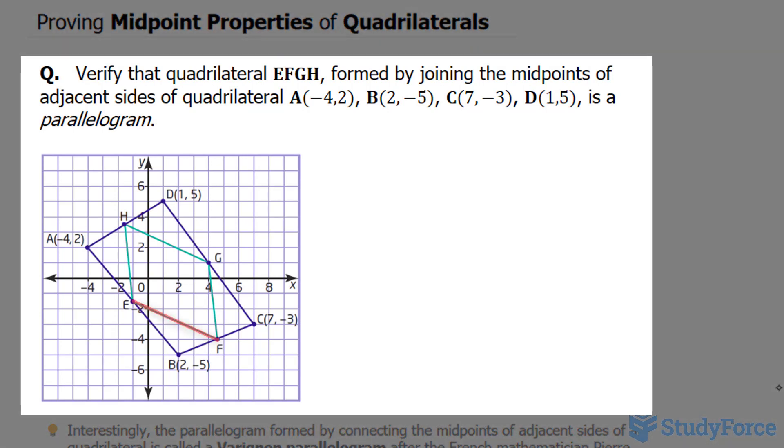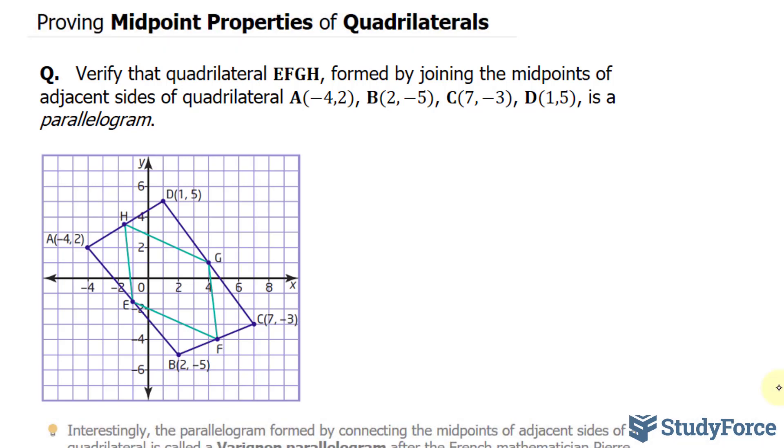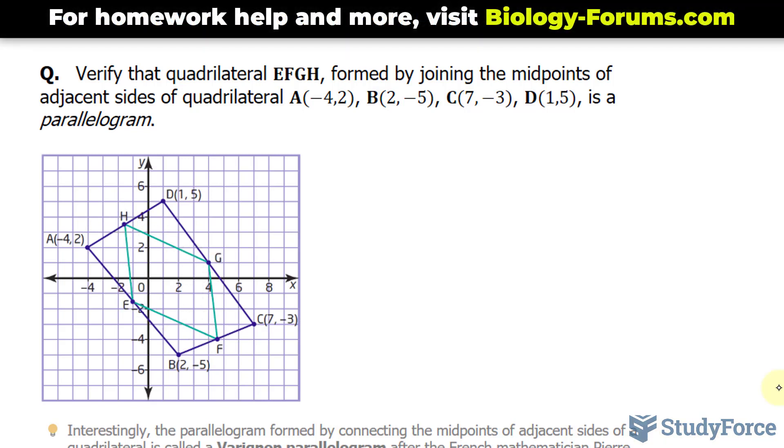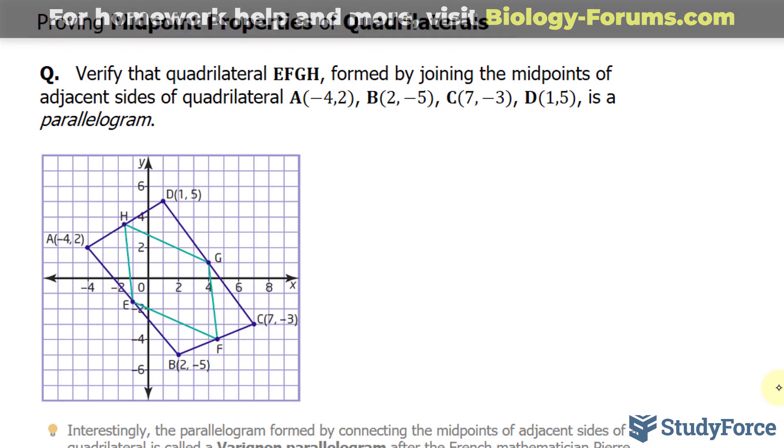The question reads: verify that the quadrilateral EFGH formed by joining the midpoints of adjacent sides of quadrilateral A, B, C, and D is a parallelogram. In other words, we have a quadrilateral A, B, C, and D, and when you connect these midpoints, you will form a parallelogram. We have to prove that what's in green here is a parallelogram.